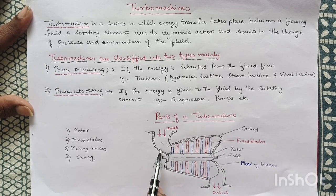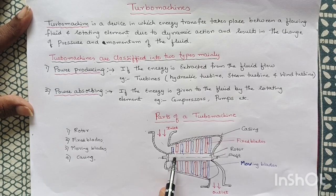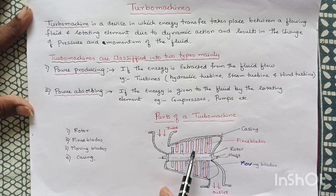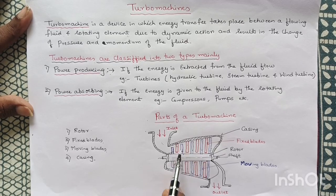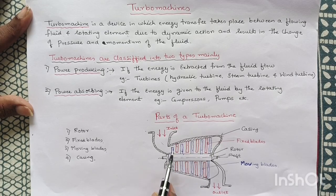As the steam flows over the moving blades, it is accelerated with a reduction in pressure and temperature of the steam, which causes an increase in the velocity of the steam flowing over the moving blades. This increase in velocity creates a force that acts on the moving blades and causes them to rotate.